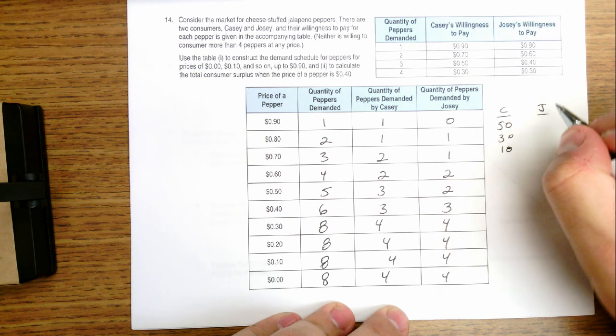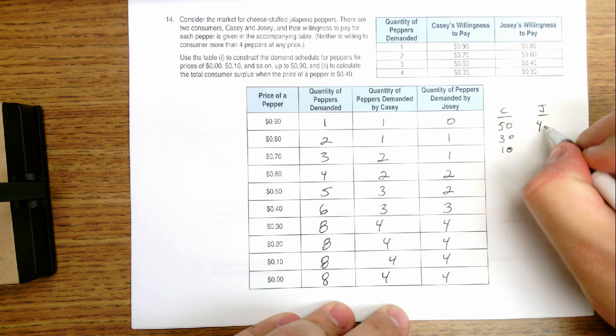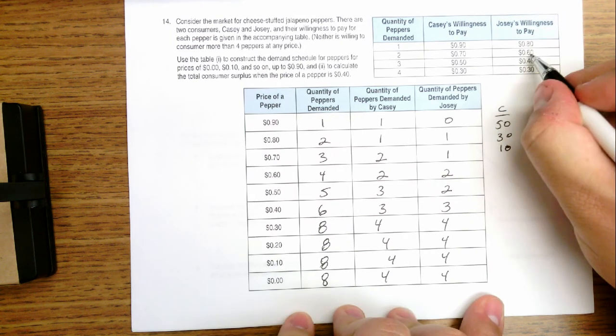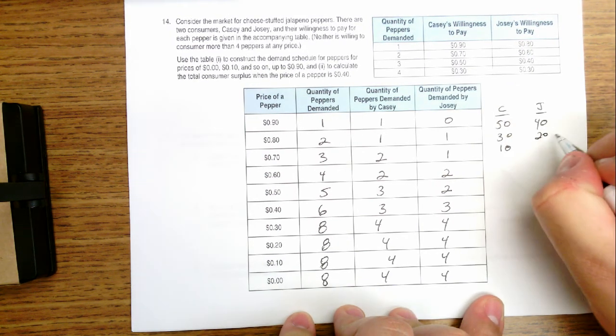For Josie, if the price is $0.40, she'll get $0.40 worth of consumer surplus for the first pepper. She'll get $0.20, because it's the difference between the price she's paying $0.40 and the $0.60 she was willing to pay for the second pepper.